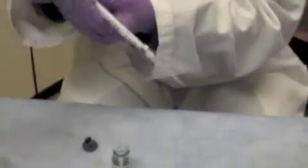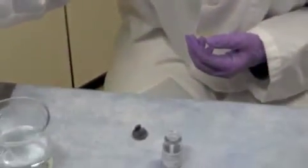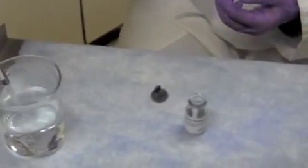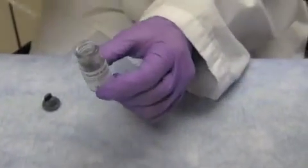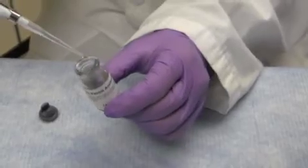Take 100 microliters of deionized water and dispense it into the vial. Hold the vial at a 45 degree angle.